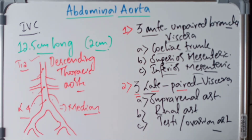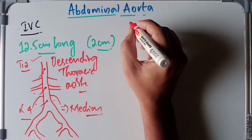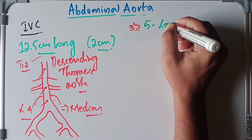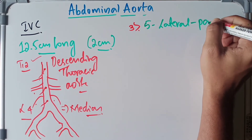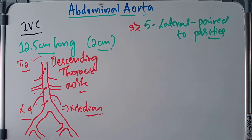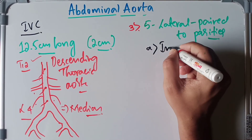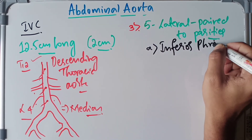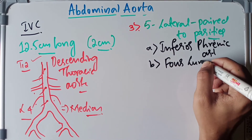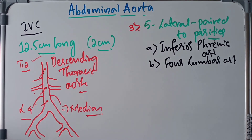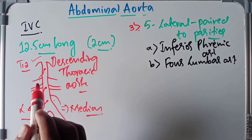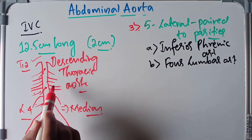The third division consists of five lateral paired branches to the parietes — meaning the parietal regions. These are the inferior phrenic artery, which arises just at the level of the diaphragm, and the four lumbar arteries.